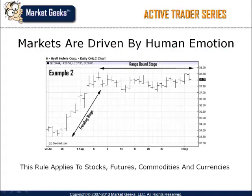Since markets are driven by people, and people are emotionally driven, this pattern tends to apply across stocks, futures, commodities, currencies, and most other traded financial markets. Moreover, this pattern of alternating between range-bound and momentum tends to apply to different time frames as well.